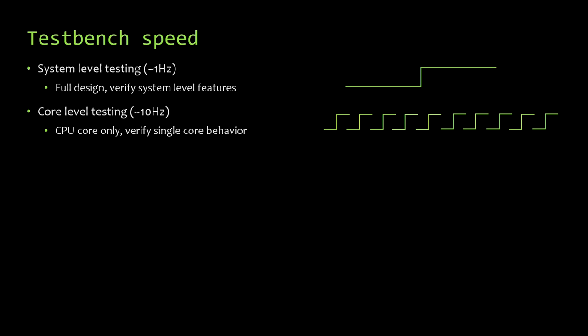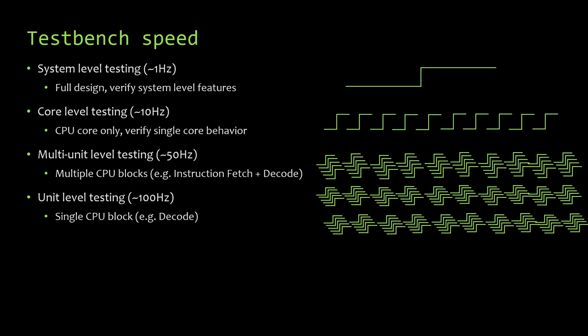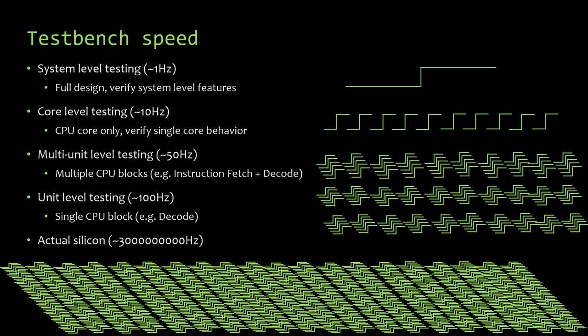If you break it down even further, you can get what I call multi-unit testing — combining a few related blocks, like an instruction fetch and decode unit together. Or you can go down to single unit testing, like the decoder or the load store unit, and you're looking at in the ballpark of 100 to 200 hertz — so 100 to 200 cycles per second of simulation. Compare that to real silicon, which runs at 3 billion cycles per second, and you'll see this is far off.